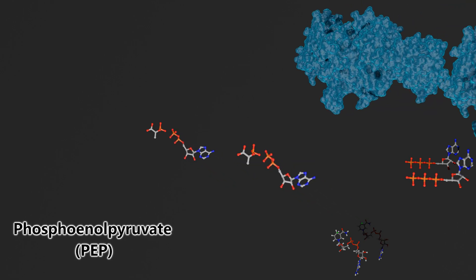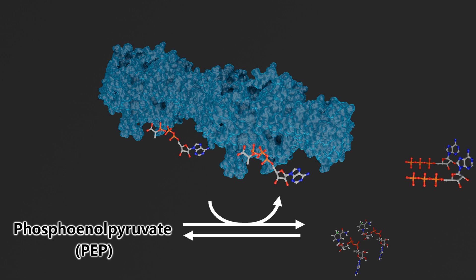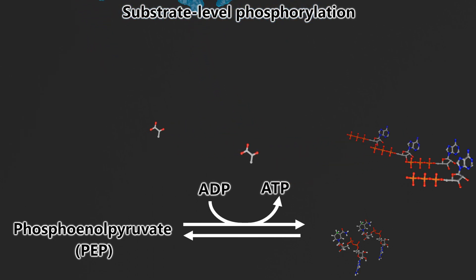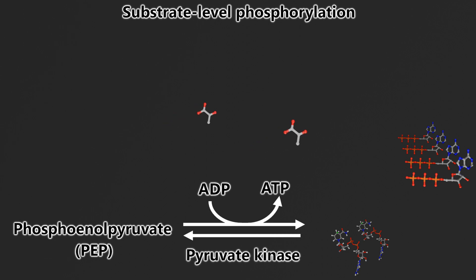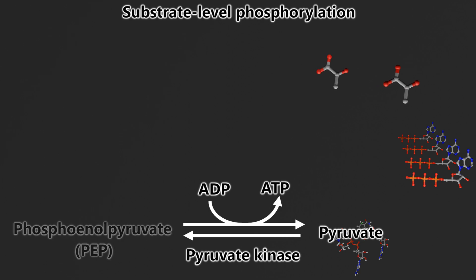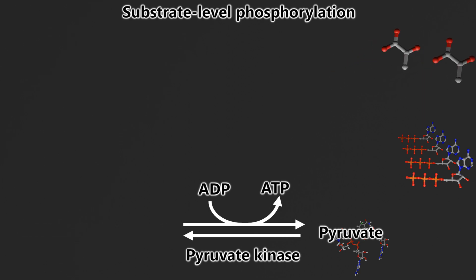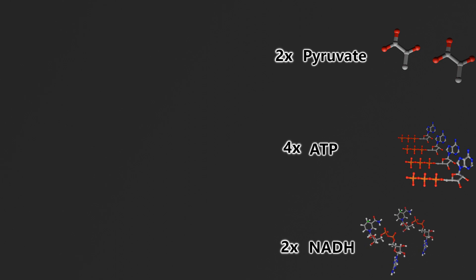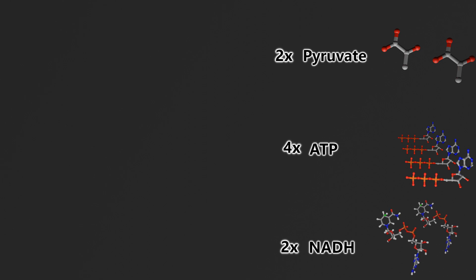Finally, our PEP molecule is going to be used to phosphorylize our last 2 ADP molecules using the enzyme pyruvate kinase, and our final molecule that we are left with is 2 pyruvate molecules. Alright, so that does it for our intermediate video of glycolysis. Be on the lookout for the Krebs cycle beginner and Krebs cycle intermediate, which is our second phase of aerobic respiration, and finally we'll finish off with the electron transport chain. Thanks guys.